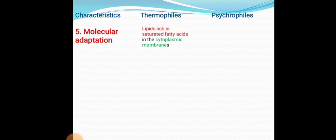In the case of thermophiles, they contain repeat-rich saturated fatty acids in their cytoplasmic membranes. Whereas psychrophiles contain short unsaturated fatty acids in their lipid cell membranes. These short unsaturated fatty acids have a lower melting point, which increases the fluidity of the membranes and helps overcome the stiffening of the lipid cell membrane at cold temperatures.